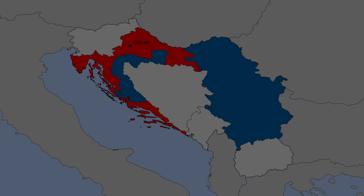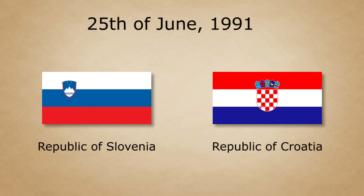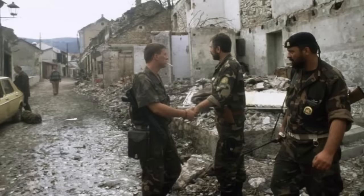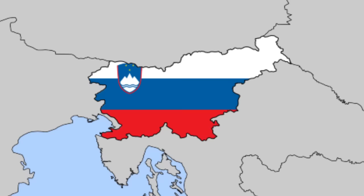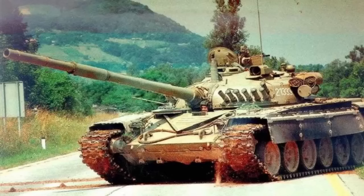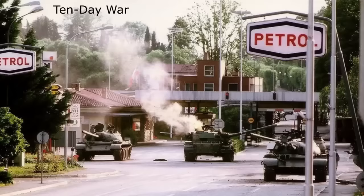On the 25th of June 1991, Slovenia and Croatia both officially declared their independence. By this point, the Yugoslav wars had already begun, but they were thus far mostly confined to Croatia, between the Croats and the Serbs. However, with Slovenia declaring their independence, this brought them into the war as well. The Yugoslav army travelled to Slovenia, with a goal of asking them to politely reconsider their independence. Two days after their declaration of independence began what became known as the Ten Day War between Slovenia and the Yugoslav army.